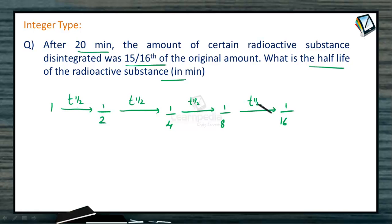So here in four half-lives the initial amount is converted into one by sixteenth part. So this is the amount of substance left after four half-lives and that four half-lives value is equal to 20 minutes. It is given here.